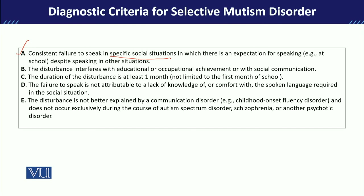Criteria B states that because of this, the child's educational achievement and social communication are affected. For example, if the teacher asks the child to read aloud in class and the child is unable to do so, this will definitely affect their educational scoring. Similarly, social communication is affected because the child is unable to interact with classmates, which ultimately disturbs their social relationships.